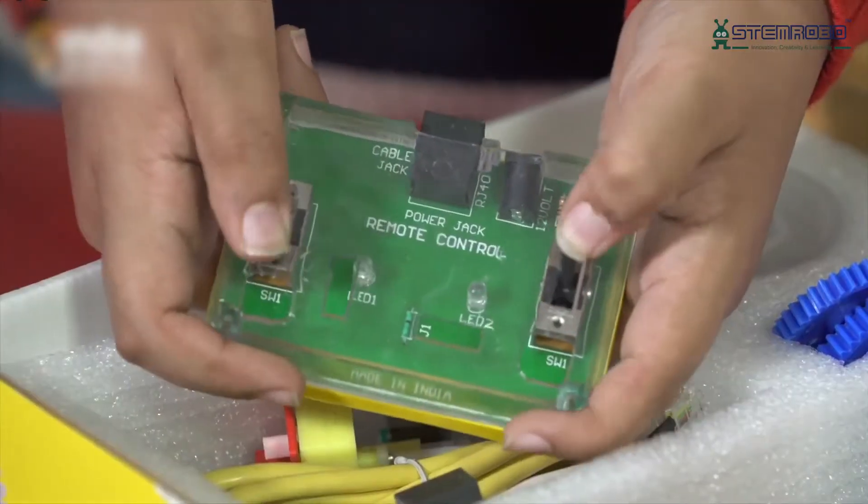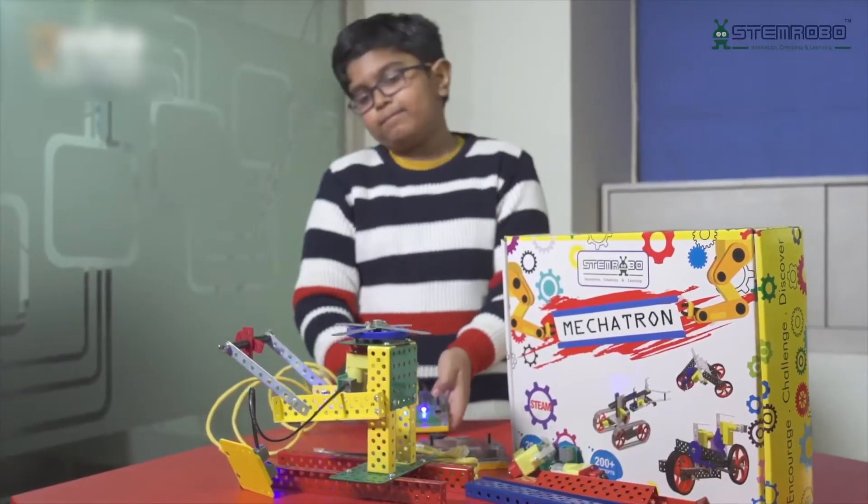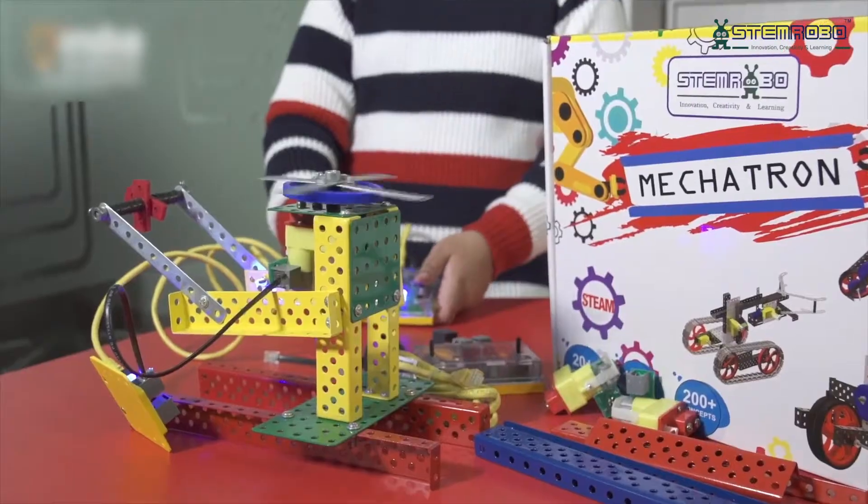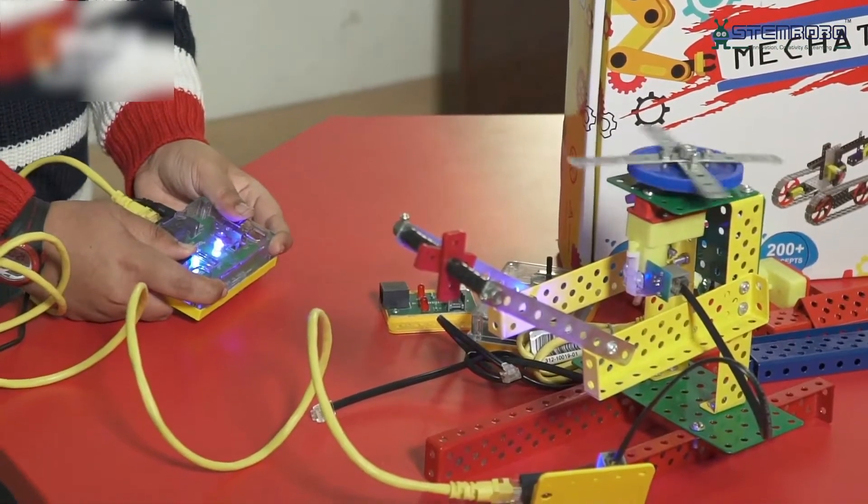For young robotic enthusiasts, the Mechatron kit seamlessly weaves science and math into robotics, guiding children age 6 and above in building their own robots.